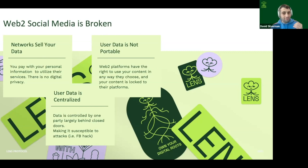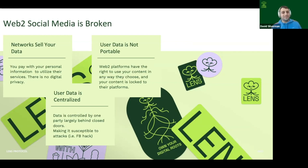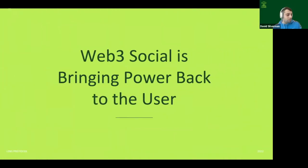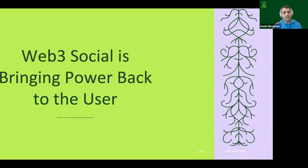The social graph becomes a moat. Even if I'm a startup with a better user experience and fairer algorithms, I'm at a huge disadvantage because I have to bootstrap that graph. User data is also centralized — large databases become targets for hackers and bad actors. The goal with Lens is to use web3 tools to bring power back to users and creators, and really change the game theory of web2 social. It's currently zero-sum — Facebook, Twitter, TikTok are all incentivized to lock you into their ecosystems.